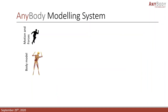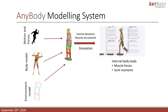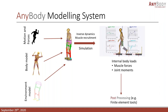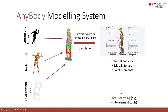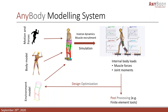The typical workflow in AnyBody looks something like this: you provide the motion data as input and use the body models which you or others have built, then provide some kind of environment — for example an exoskeleton. You can use AnyBody to combine these things and run inverse dynamics simulations to calculate the internal body loads. You can then output the results for post-processing, for example with a finite element tool, or close the loop by doing design optimization and running this cycle multiple times.